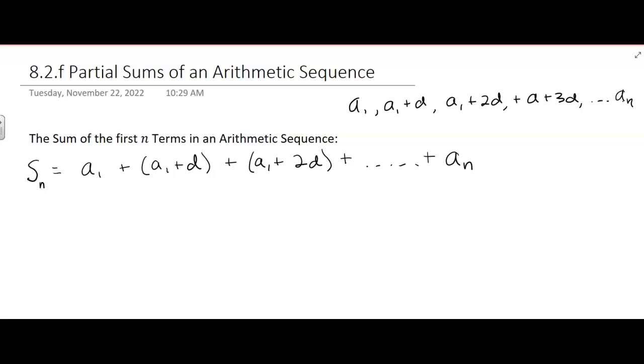Now what if we went the other way? What if we started with the last term and subtract the d? So I could rewrite this, starting with a sub n, the last term, and then the previous term would be a sub n minus d. You subtract the common difference. Then you'd have a sub n minus 2d, then a sub n minus 3d, and you'd keep doing that until you got to the first term, a sub 1.